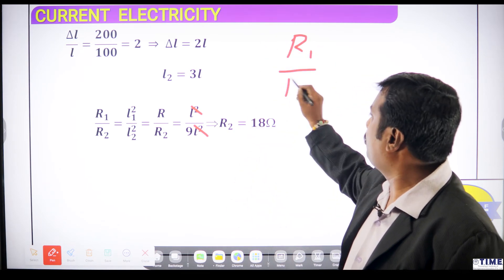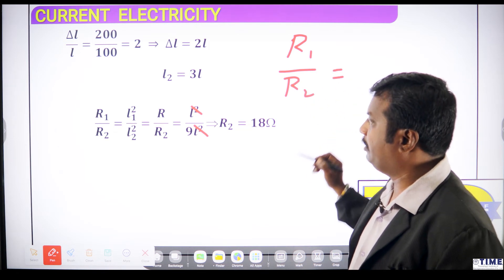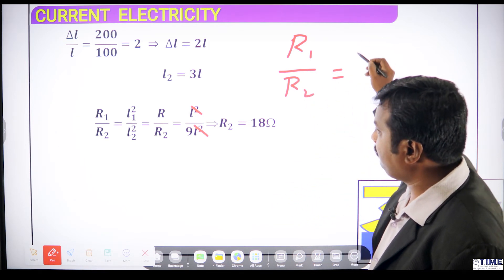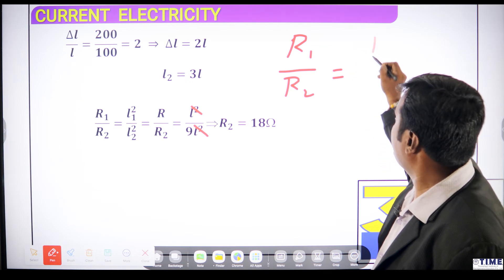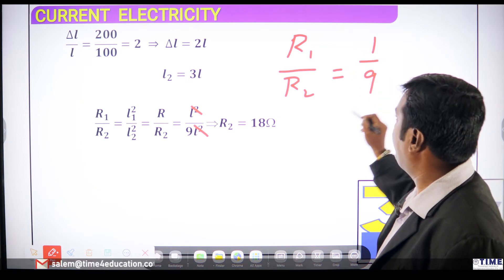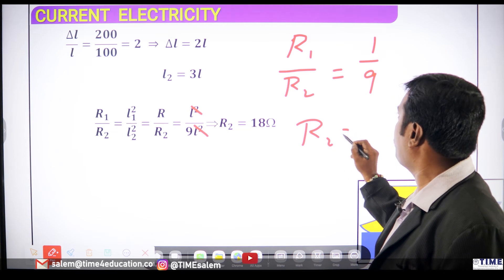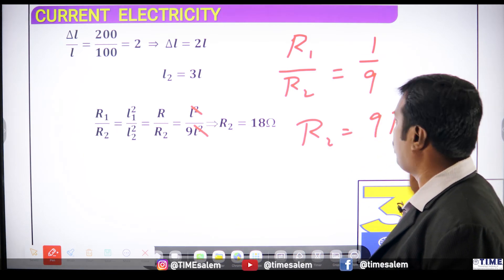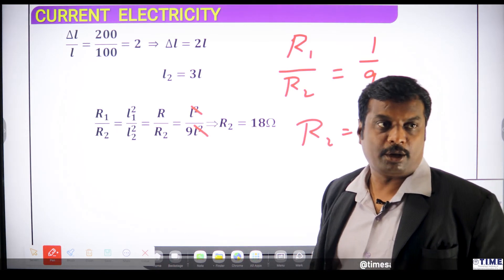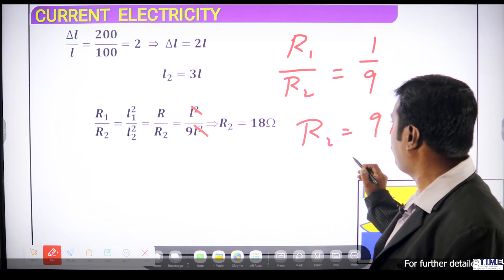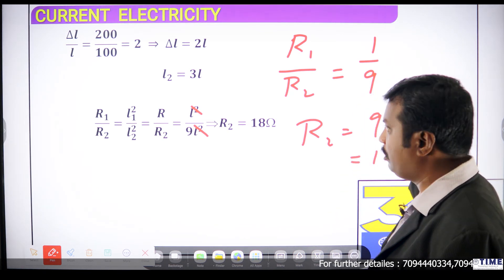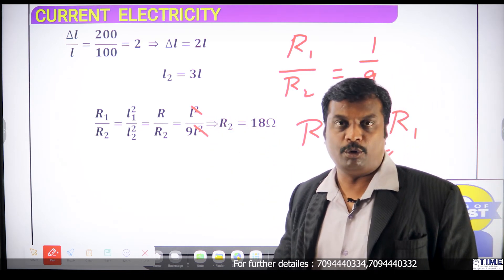R1 by R2 will be equal to 1 by 9. What will be the value of R2? R2 is equal to 9 times R1. What is R1? 2 ohm. 9 into 2 will be 18. R2 will be 18.